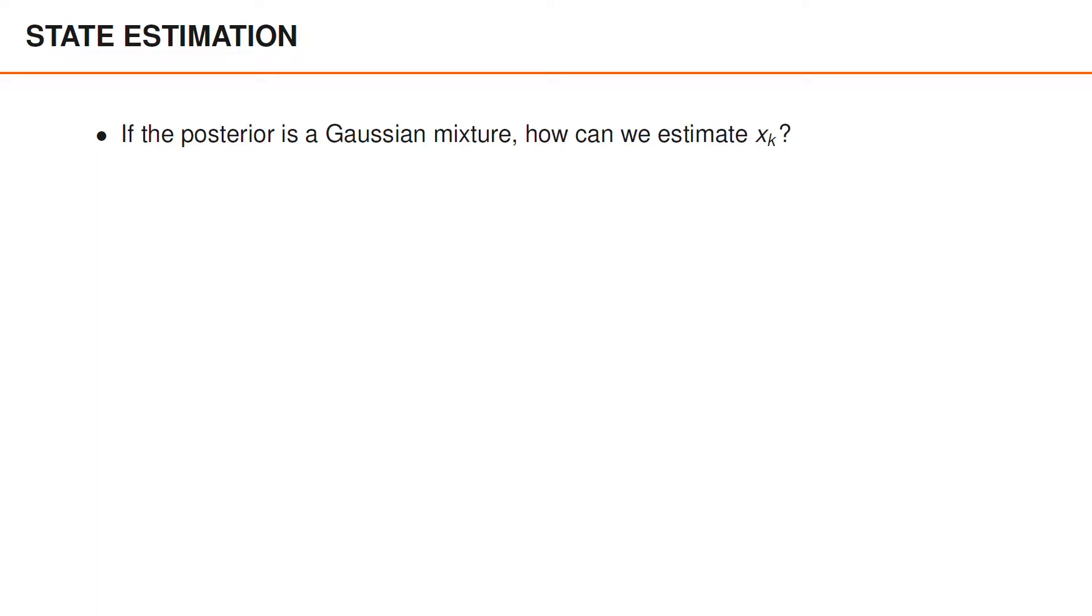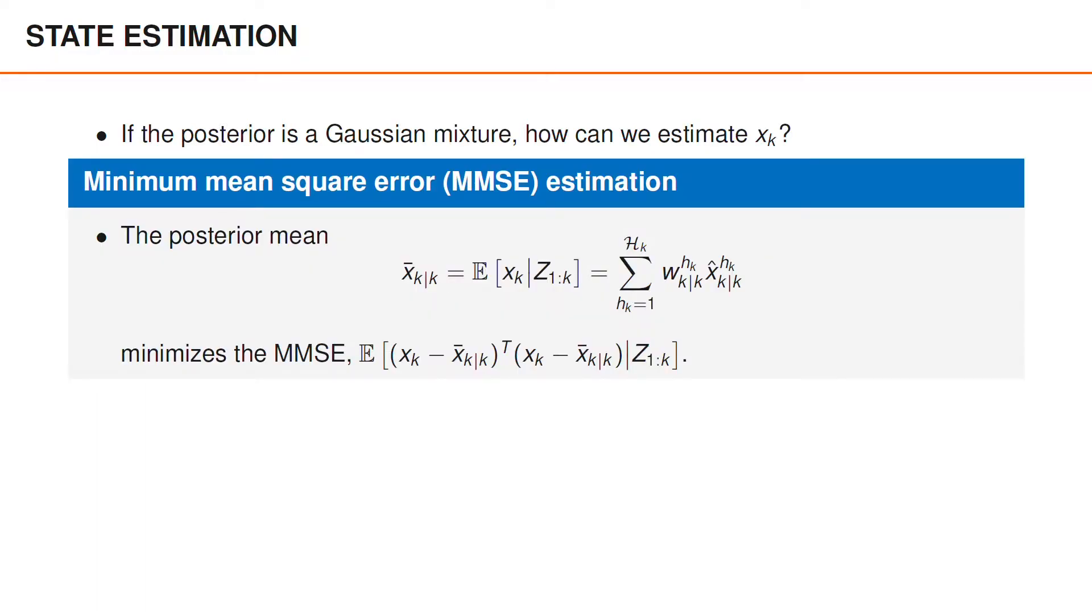However, in a Gaussian sum filter, where the posterior density is a Gaussian mixture, the choice of estimator may not be as simple. One alternative is to use the minimum mean squared error estimator, which means that we use the posterior mean as our state estimator. As we mentioned in the videos about PDA filtering, the posterior mean is the sum of the mean of the different hypotheses, weighted by the probability of the same hypothesis.